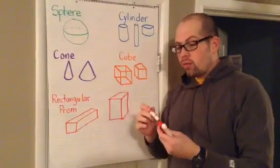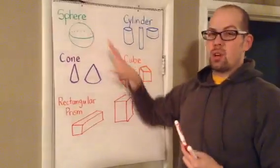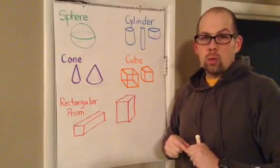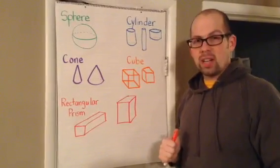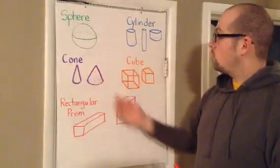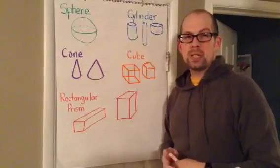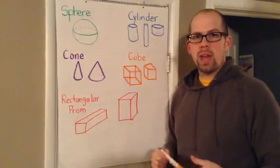And now you're going to look for some of these shapes around your house, or around the school, wherever you're doing this e-learning day. Look for spheres, cylinders, cones, cubes, rectangular prisms, and draw them and write them down.